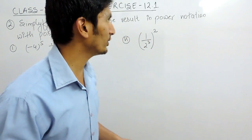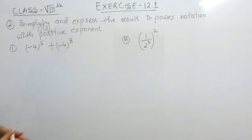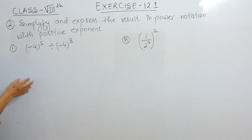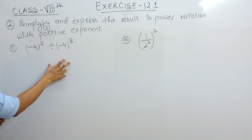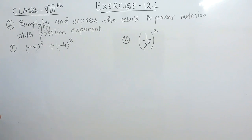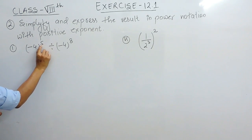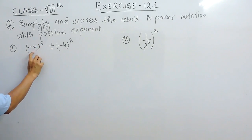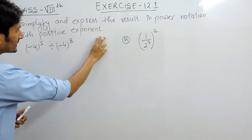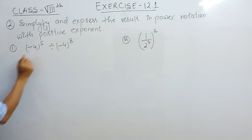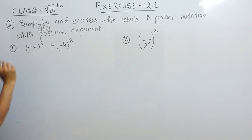Hello everyone. In this video we are going to solve question number 2 of exercise 12.1, and we are going to solve its first two parts. The first part requires you to simplify and express the result in power notation with positive exponents. Power notation means the expression is written in power form, and positive exponents means the power should be positive.